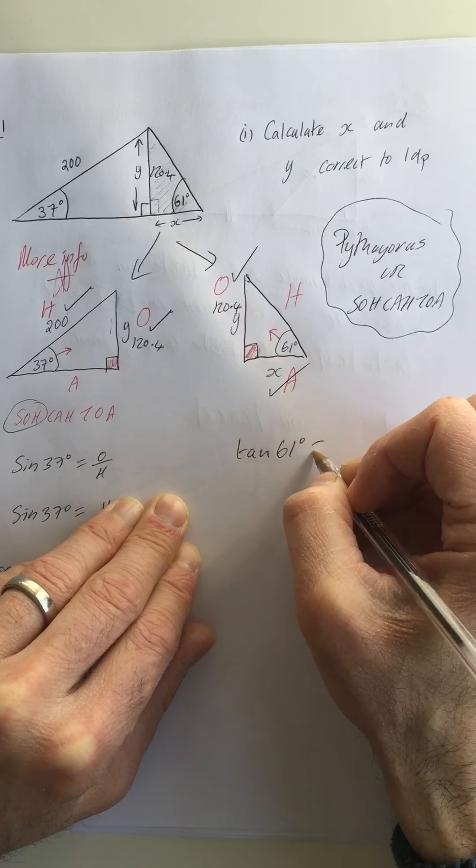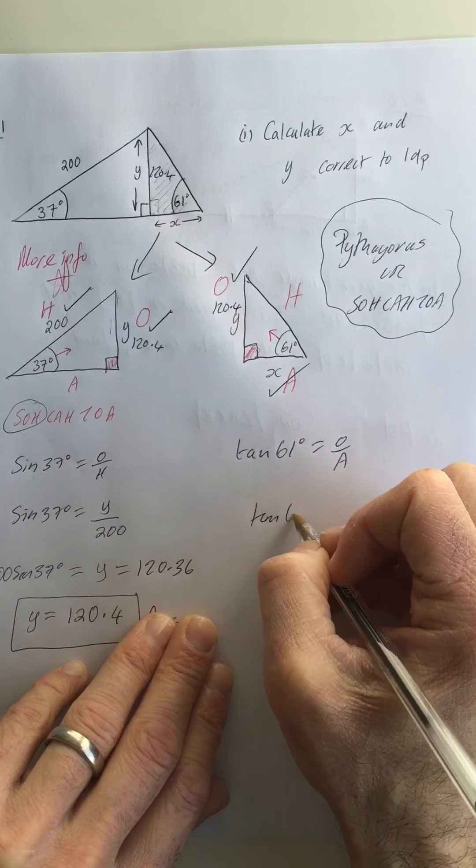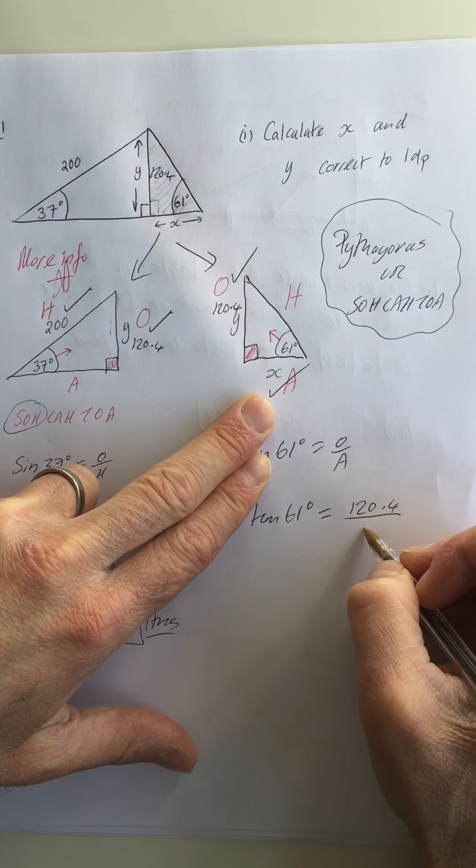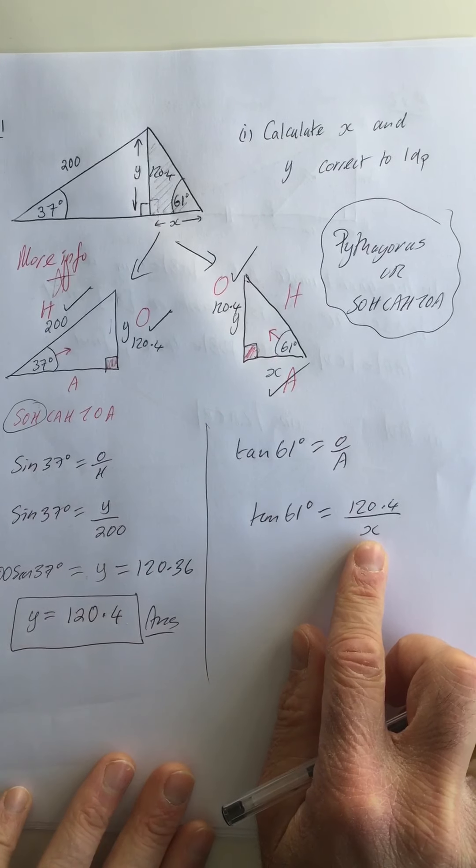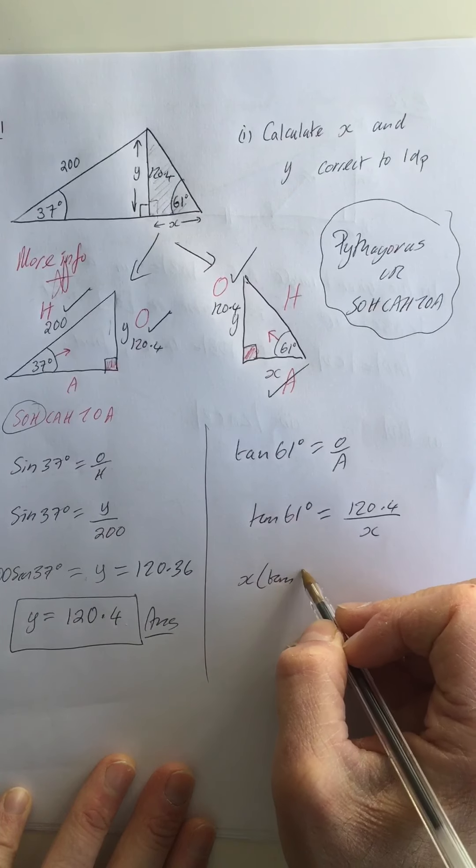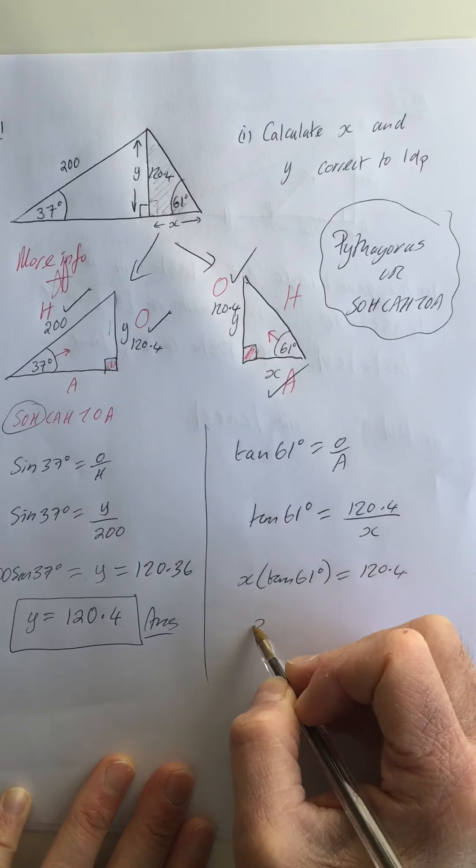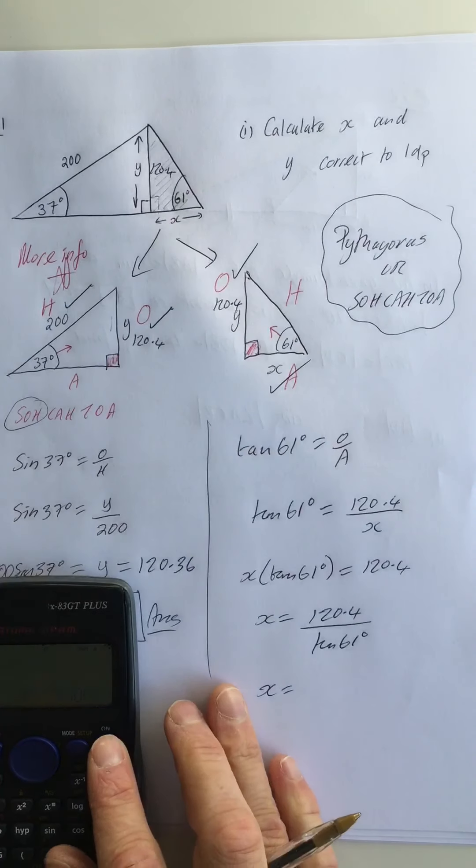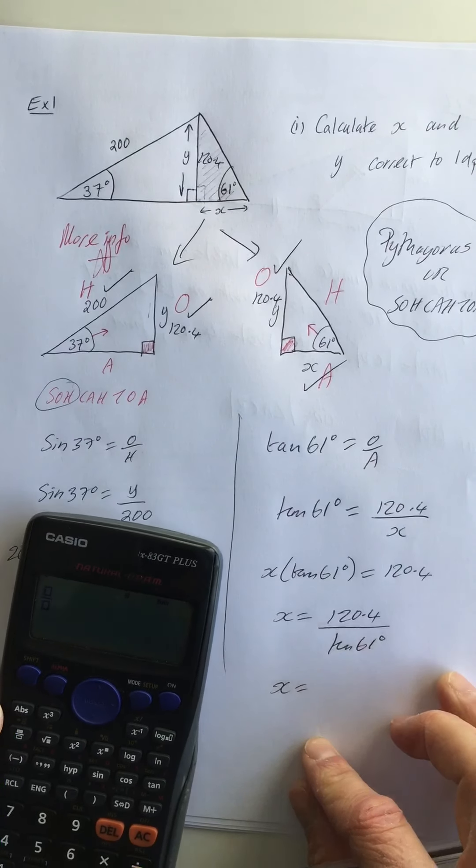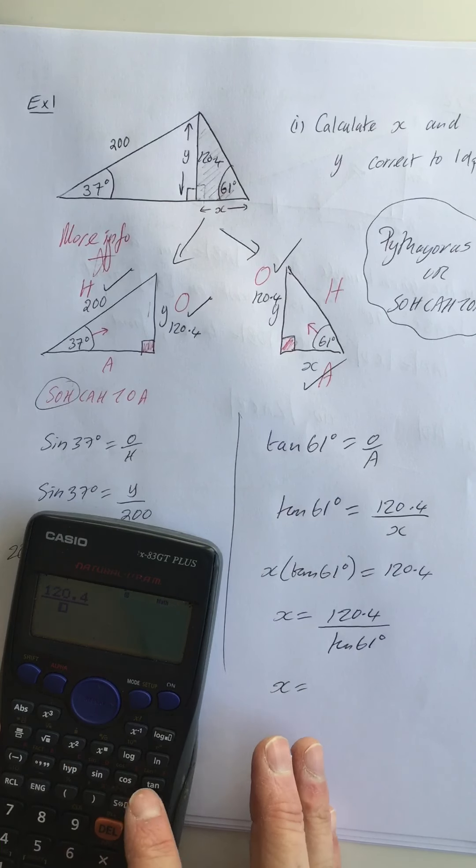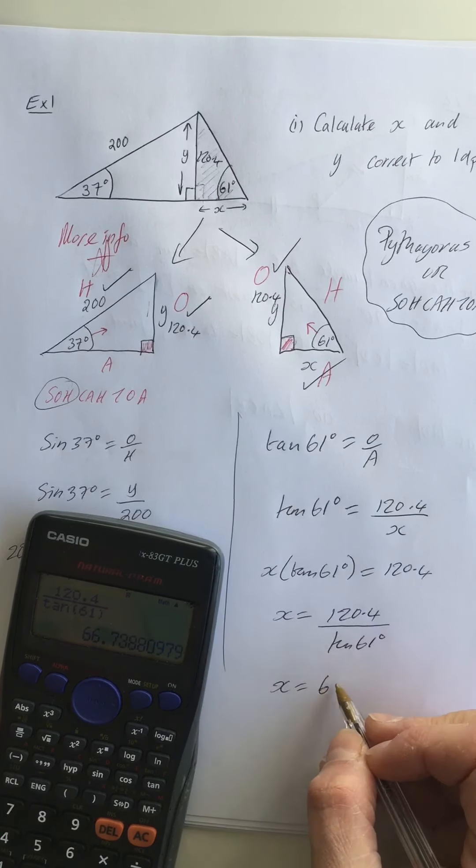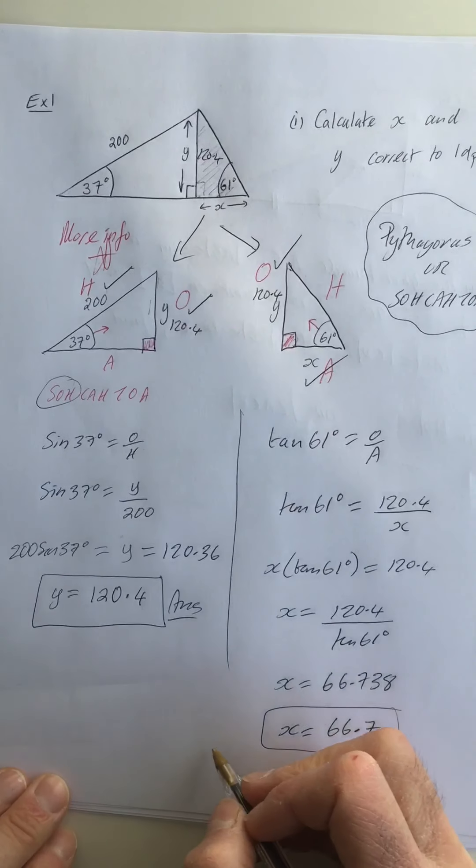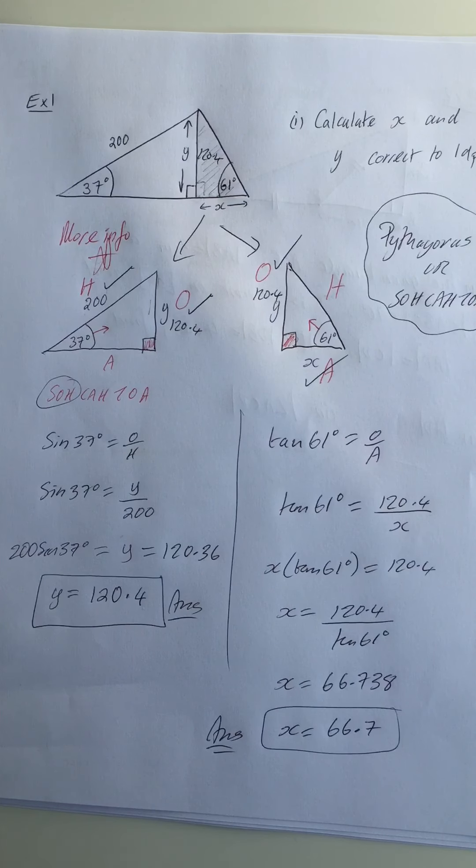So I say tan of 61 degrees is O over A. So the tan of 61 degrees will be my O number, which is 120.4, divided by my A number, which is x. Now here's an example of one where the letter's on the bottom. Remember what we do? We cross multiply. X multiplied by tan 61 is equal to 120.4, and then x will be 120.4 divided by tan 61. I can do this on my calculator. So I'm going to put 120.4 over tan 61 and press equals, and up comes 66.738. Now they want it correct to one decimal place, so this is 66.7.